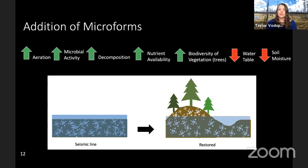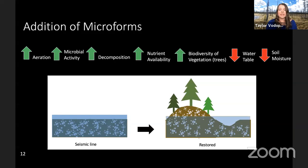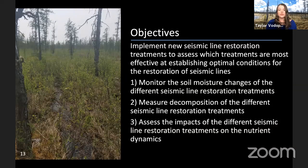It's important when we restore these seismic lines that we re-add microforms. Adding hummocks will allow increased aeration, microbial activity, decomposition, and nutrient availability, allowing trees and other vegetation to grow on these drier hummocks. But we must still have hollows so that water-loving vegetation like sphagnum can thrive on the landscape. For my study, we implemented new restoration treatments and assessed which treatments are most effective in establishing optimal conditions. I'll discuss soil moisture changes between treatments, how that influenced decomposition, and the impacts on nutrient dynamics — specifically bioavailability and mineralization rates of nitrate, ammonium, and soluble reactive phosphorus.